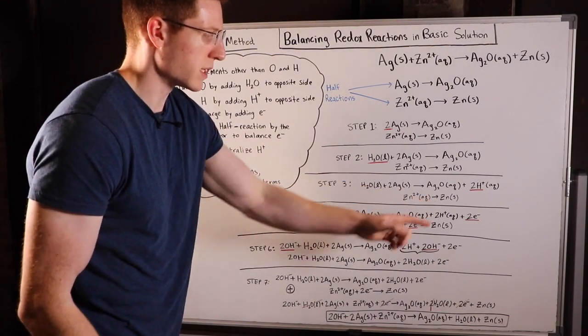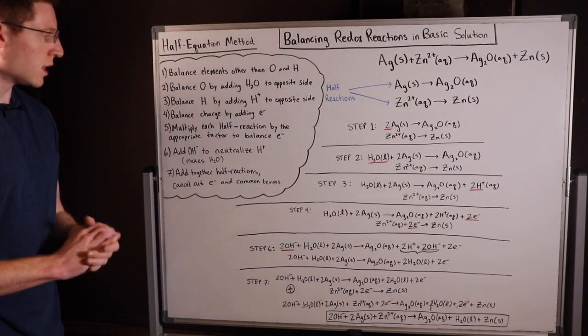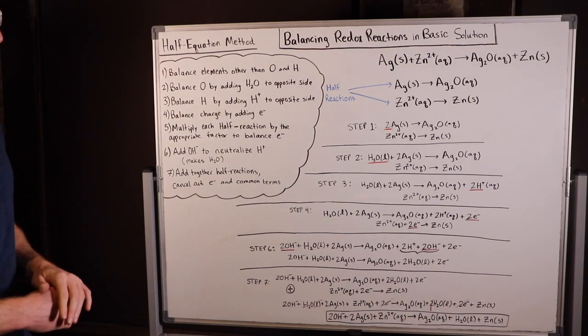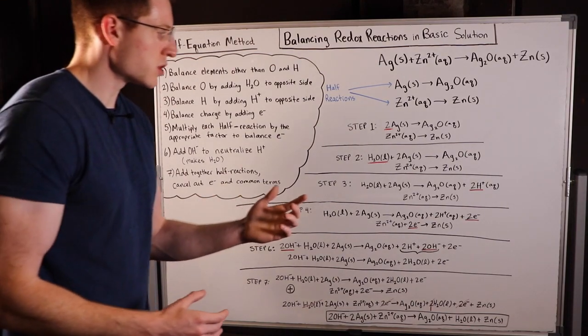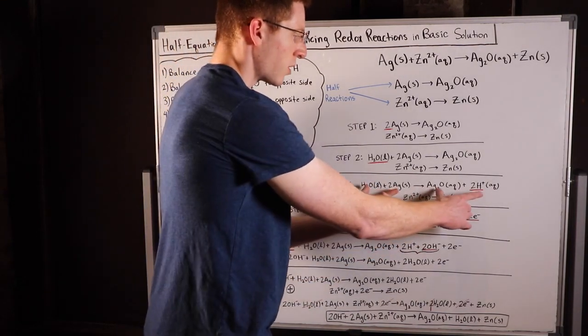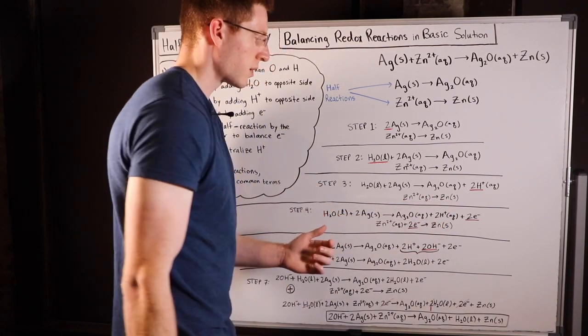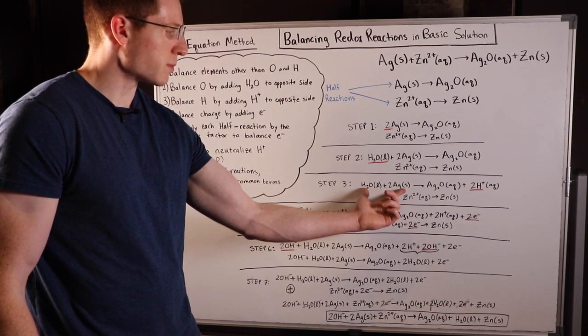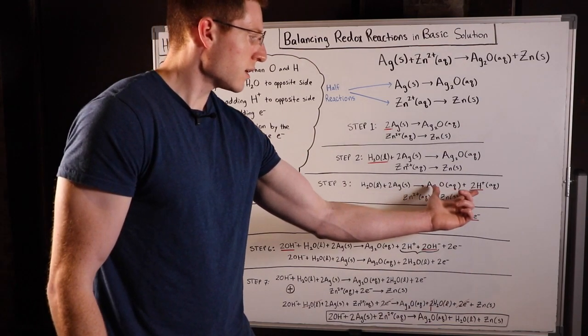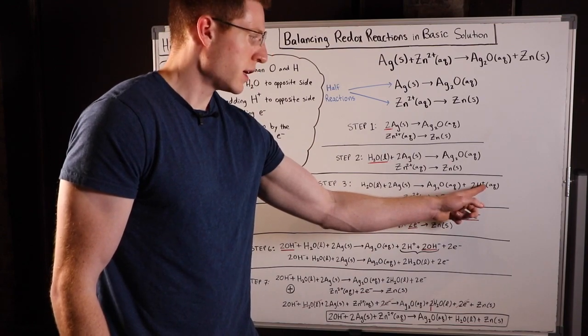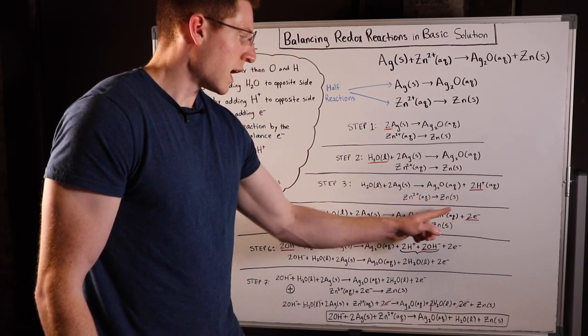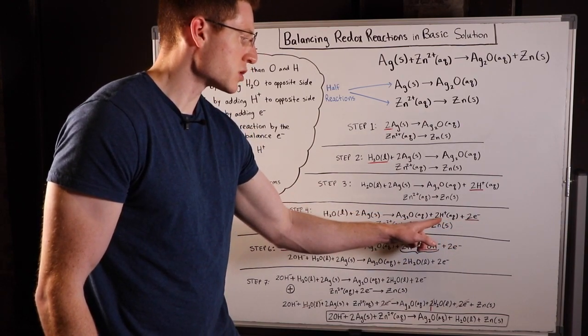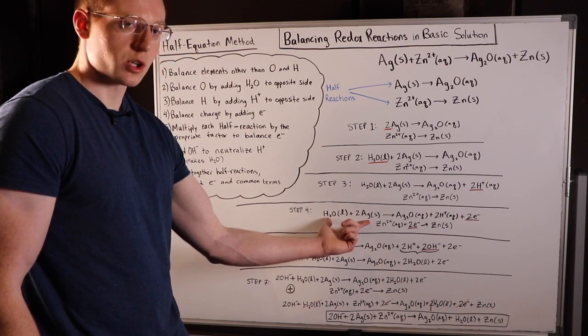Step four: we balance the charge by adding electrons. In order to do this you need to look at the overall charge on the reactant side and the product side. For the reactant side here the overall charge is zero - it's neutral, there are no charged molecules here. But over here we have a plus two charge, so that means in order to balance this I'm actually gonna have to add two electrons on this side to neutralize this two plus charge so that it matches the neutral or zero charge of my reactant side.